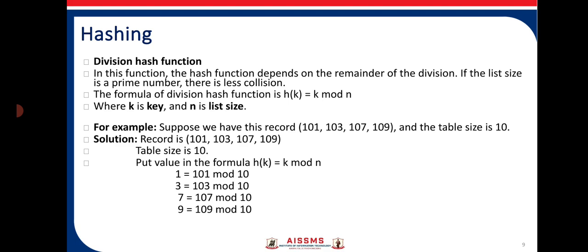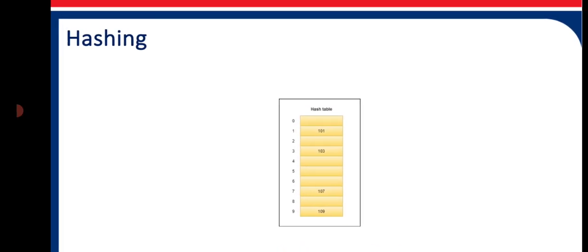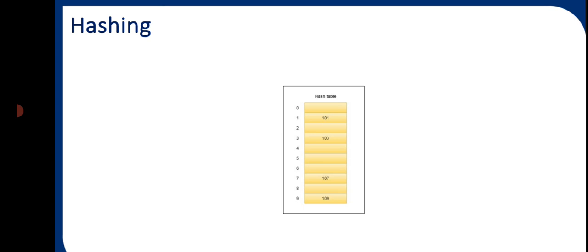Applying the formula h(k) = k mod n: 101 mod 10 gives 1, so 101 is stored at index 1. For 103 mod 10, we get 3, so 103 is stored at index 3. For 107 mod 10, we get 7, so 107 is stored at index 7. For 109 mod 10, we get 9, so 109 is stored at index 9. So the values 101, 103, 107, and 109 are kept at their respective indices 1, 3, 7, and 9 in the hash table.